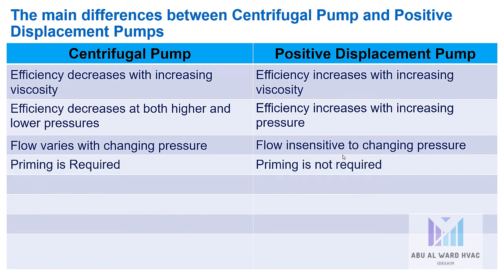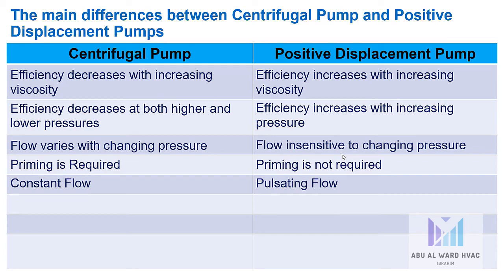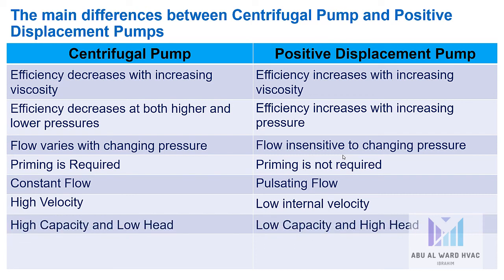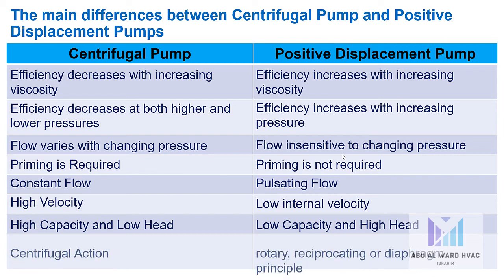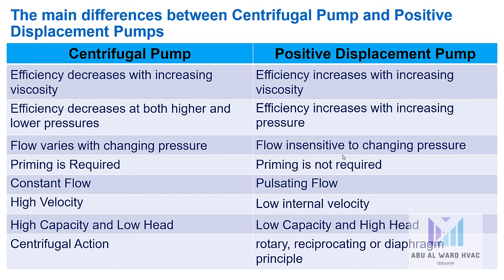Priming is required in centrifugal pumps but not in positive displacement pumps. Centrifugal pumps produce constant flow, while positive displacement pumps produce pulsating flow. Centrifugal pumps operate at higher internal velocity; positive displacement pumps at low internal velocity. Centrifugal pumps offer high capacity and low head; positive displacement pumps offer low capacity and high head. Centrifugal pumps use centrifugal action; positive displacement pumps use rotary, reciprocating, or diaphragm principles.